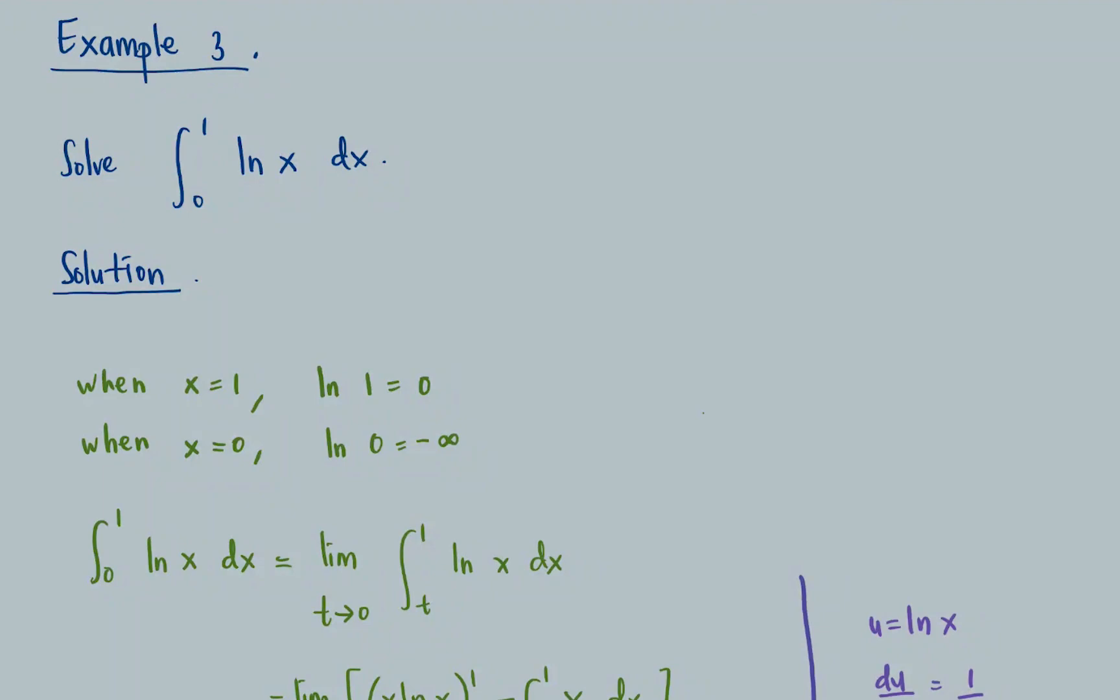Right now if we look at this integral, it is actually a normal integral that you will be able to solve directly. But as you can see here, when we substitute x equal to 1, ln 1 is equal to 0, but when x equal to 0,